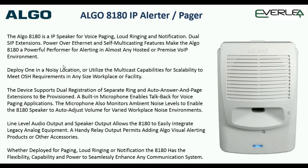On the other side of the coin, we can also use it as a pager. It has a second SIP registration we can set up for a paging unit. When we dial a SIP extension — e.g. 201 — the 8180 will chime for the paging notification and then you're speaking through for paging.